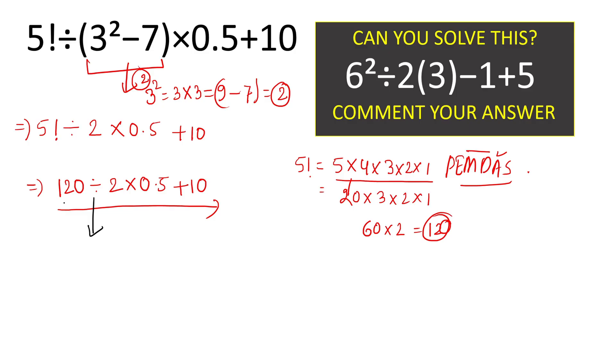So we will first operate this division part which will give result 60 here. So we will simply write 60 times this 0.5 plus 10.